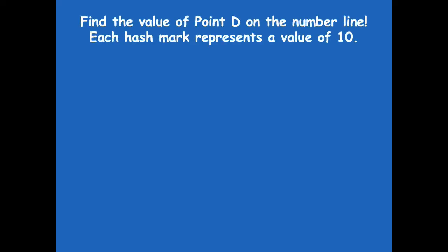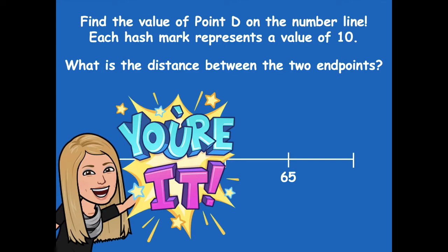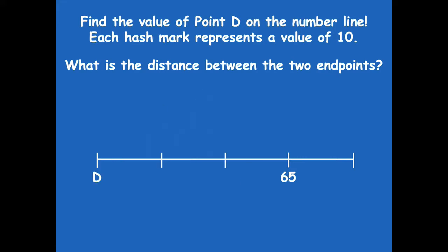Now find the value of point D on the number line — each hash mark represents a value of 10. Then find the distance between the endpoints. D is 35. We count backwards by 10s from 65: 65, 55, 45, 35. Then counting up from 65: 65 plus 10 is 75. So to find the distance, subtract: 75 minus 35 equals 40.